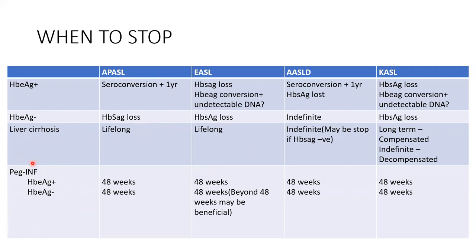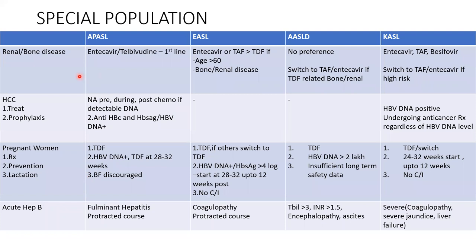For interferon therapy, the recommendation is a fixed 48-week course. For special populations with renal or bone disease, the first-line per APASL is Entecavir. EASL says Entecavir versus Tenofovir — either is acceptable. For patients with HCC undergoing chemotherapy, treatment with nucleotide analogues must be continued before, during, and after chemo. Prophylaxis is given when HBc antibodies are present along with either surface antigen positivity or DNA positivity.